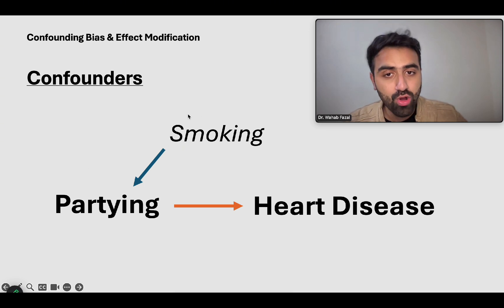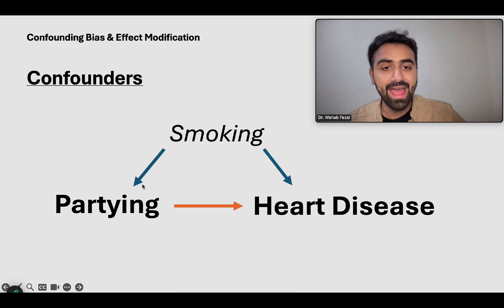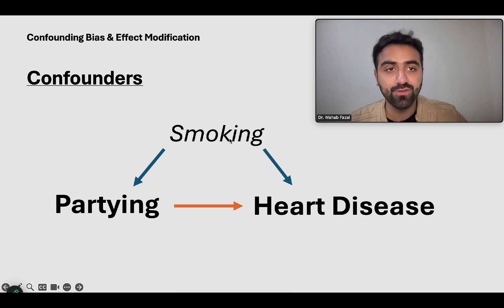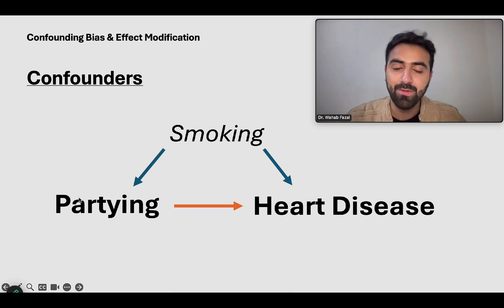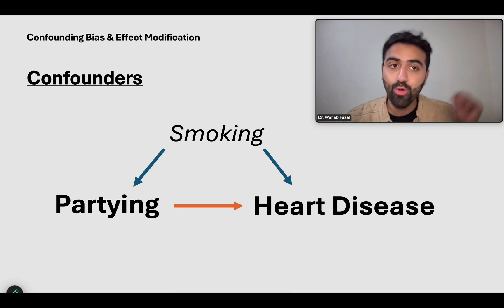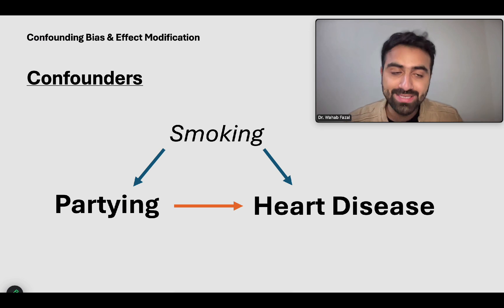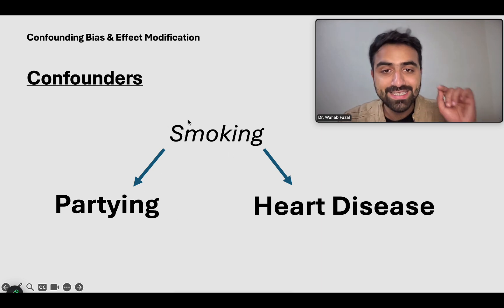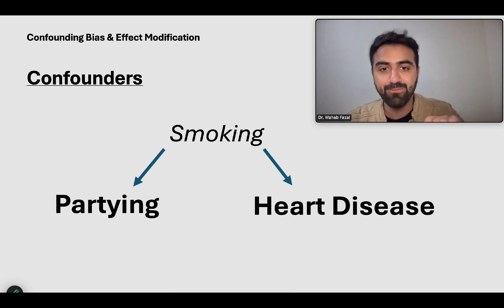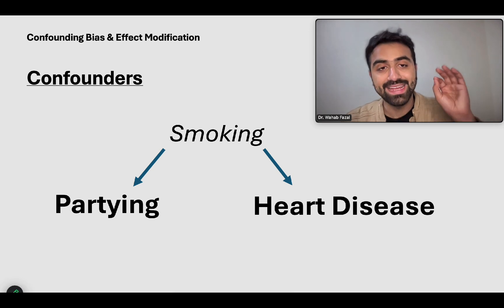When people go to parties, they smoke a lot as well. And smoking leads to heart disease. So this third factor — the factor of smoking — is linked both to the exposure and the outcome. It was not the act of partying too much; you can party in a great, healthy manner and you won't get heart disease. It was the act of smoking, and this is the third factor hiding in the background — that is the confounder.